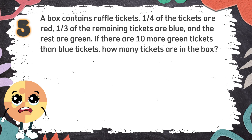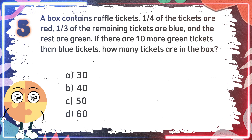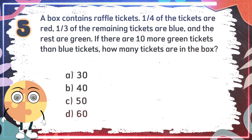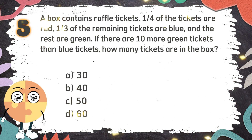Number 5. A box contains raffle tickets. One-fourth of the tickets are red, one-third of the remaining tickets are blue, and the rest are green. If there are 10 more green tickets than blue tickets, how many tickets are in the box? The choices are A. 30, B. 40, C. 50, D. 60. The correct answer is B. 40.